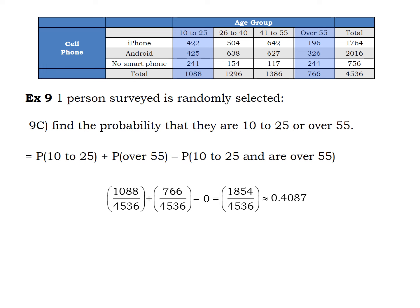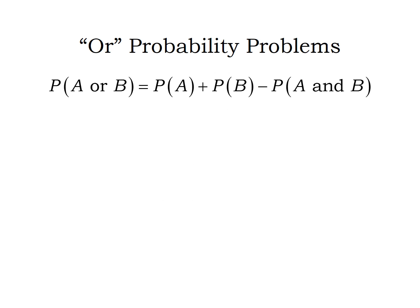So the probability of A or B equals the probability of A plus the probability of B minus the probability of A and B, if A and B can happen at the same time. We're always trying to count everything once and only once. Now we're going to move into an example that is not based on a two-way table.